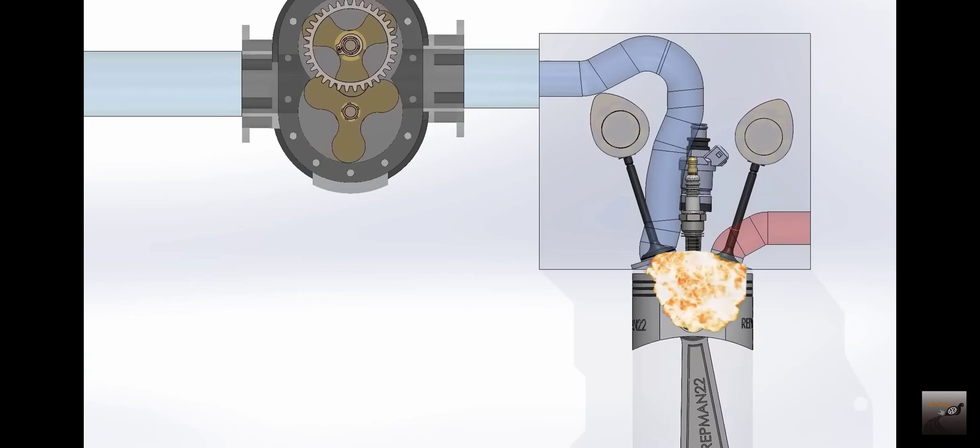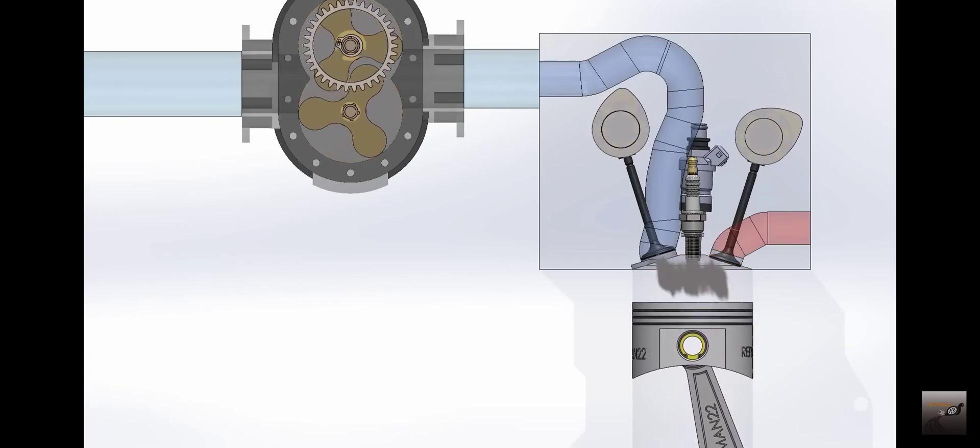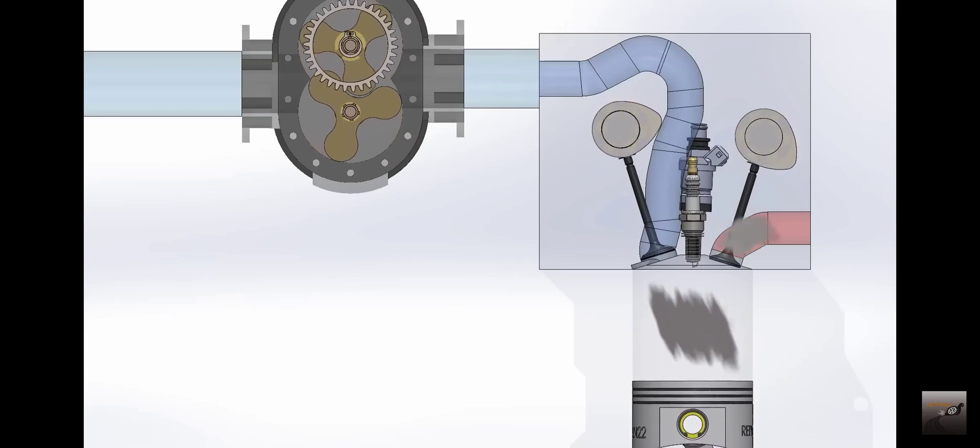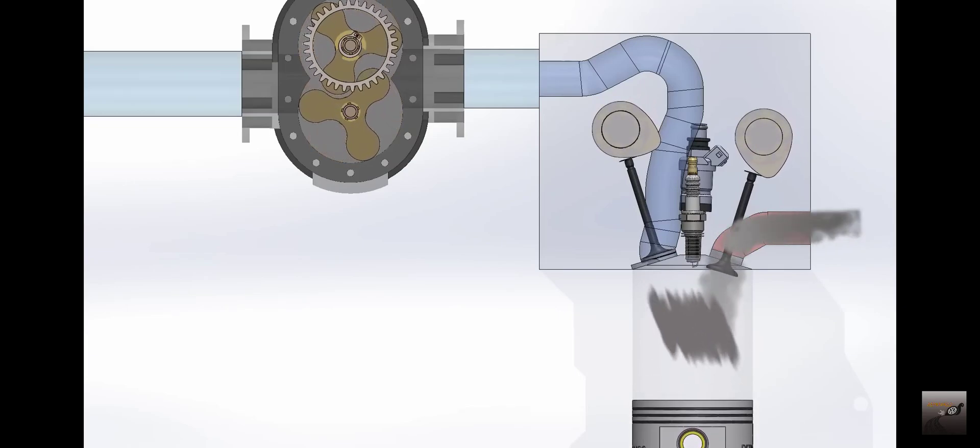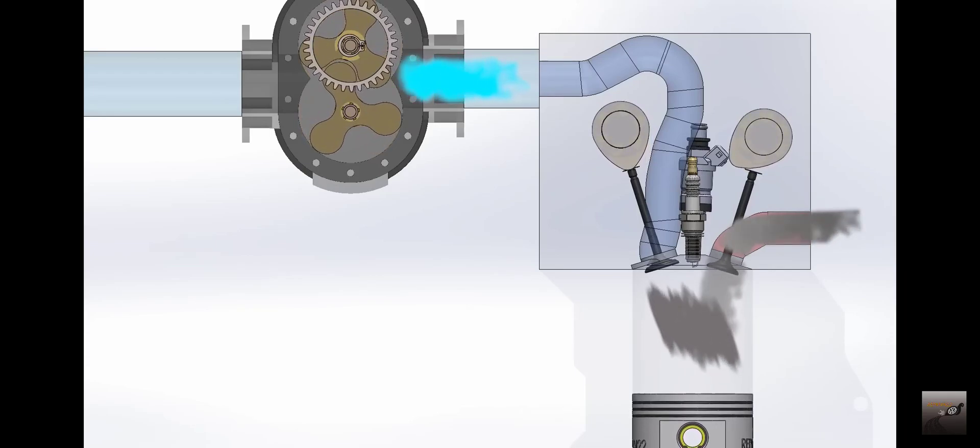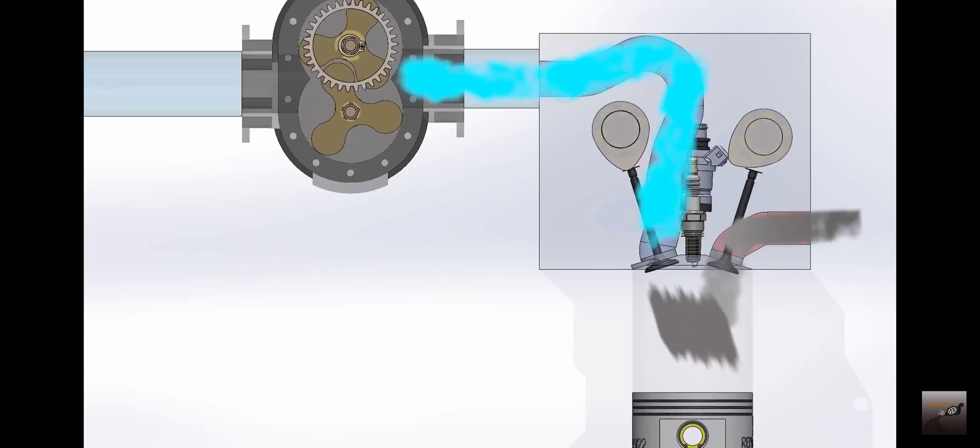The spark is fired, and the combustion drives the piston downward. When all the energy of the gases has been used, the exhaust valve opens. Thousandths later, the intake valve opens. The compressor forces fresh air in, and the exhaust gases exit through the correct place.